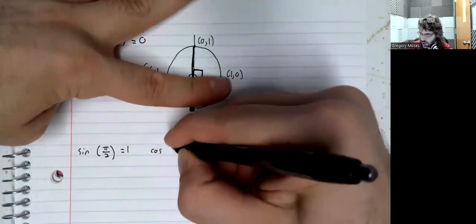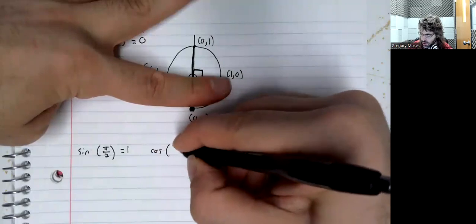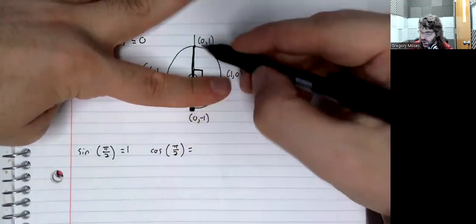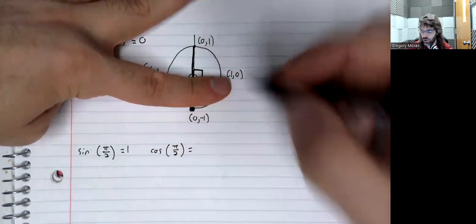If we wanted the cosine of pi over two. Now the cosine is the x-coordinate.